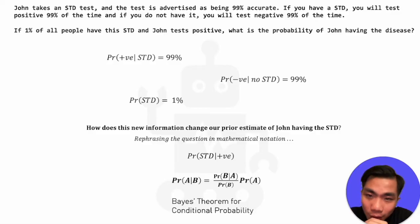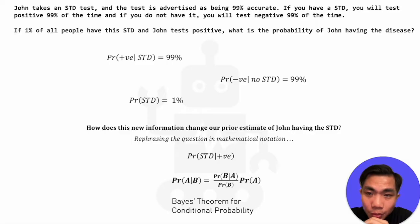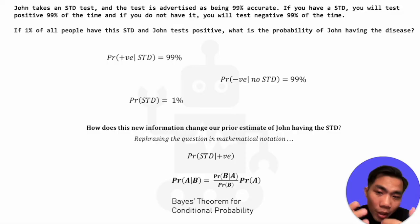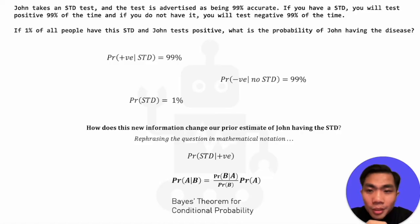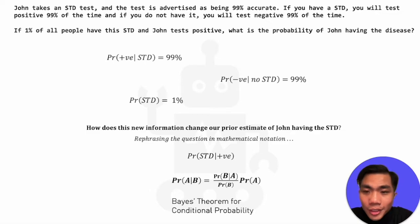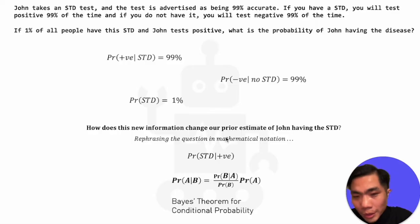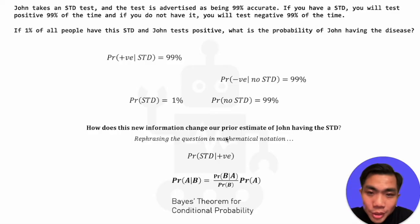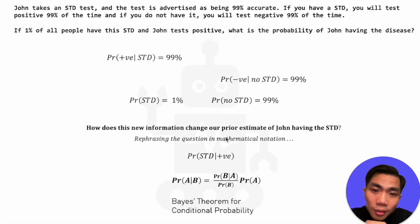Let's think about the other probabilities we can obtain from what's been described. The probability of having the STD — the prior — is 1%. This means the probability of not having the STD is 99%, because by the laws of total probability there are only two outcomes: either we have the STD, or we don't. So given that one has probability 1%, the other is 1 minus 1%, which is 99%.